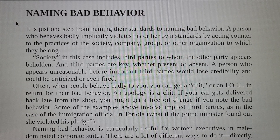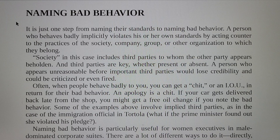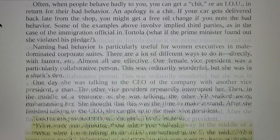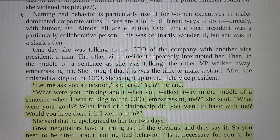Often when people behave badly to you, you can get a concession or an IOU in return for their bad behavior. An apology is a concession. If your car gets delivered back late from the shop, you might get a free oil change if you note the bad behavior. Some examples involve implied third parties, as in the case of the immigration official in Tortola, or if the prime minister found out she violated his pledge.